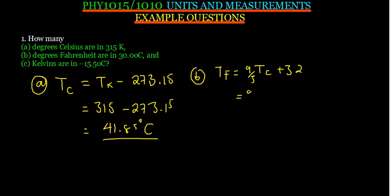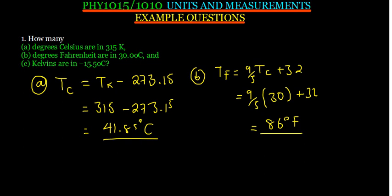So this is going to be 9 over 5, the temperature in degrees Celsius is 30, and then plus 32. We know 5 can go into 30 six times, and then we multiply 6 by 9. The answer we get, we add to 32. So that is going to give us 86 degrees Fahrenheit.